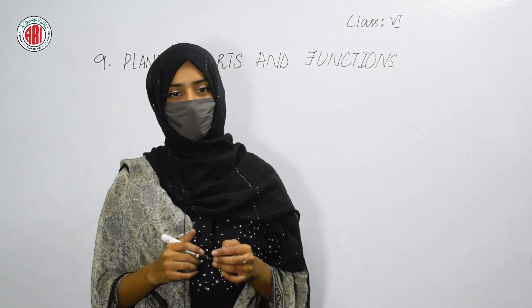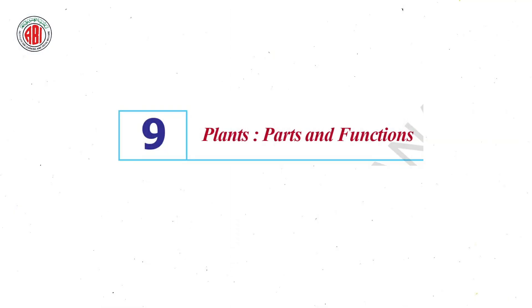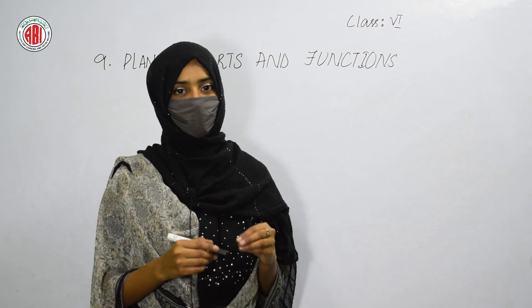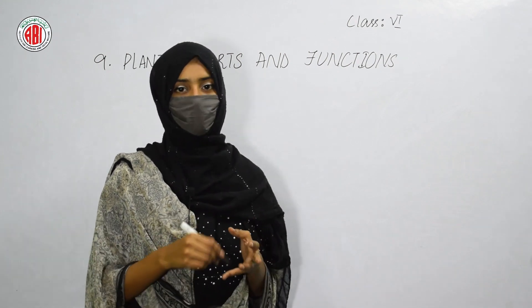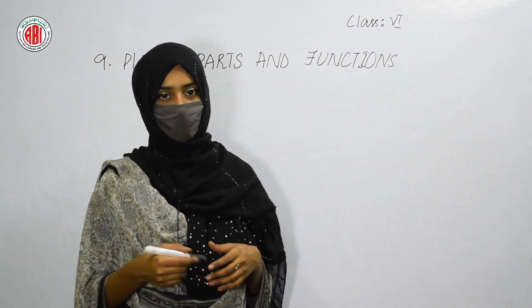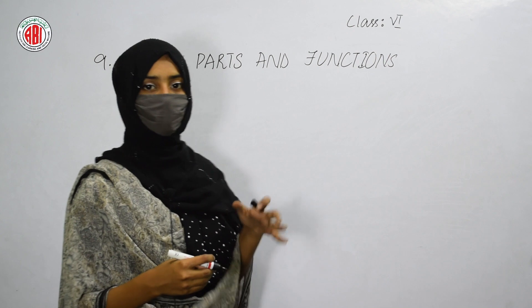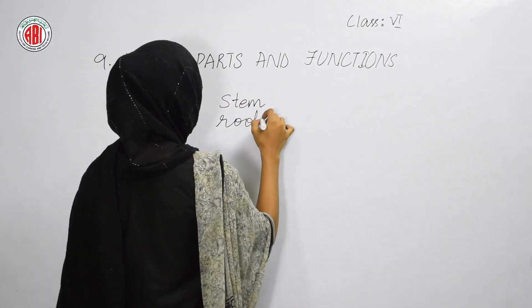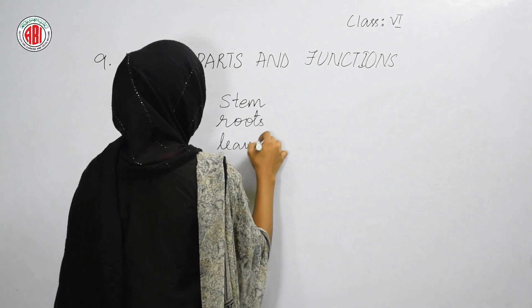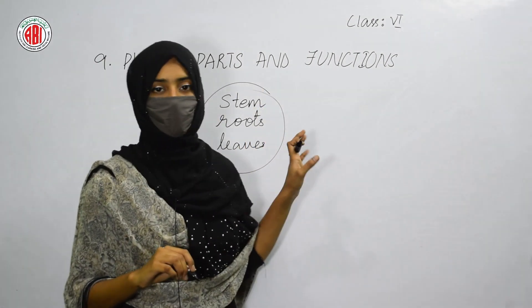Hi everyone, welcome back to my class. This is Rumana Ali. In today's class, let us start a lesson on plant parts and functions. There are some variations that can be seen in different plants in their size, color, or shapes, but basically the different parts found in all plants are stem, roots, and leaves.